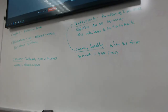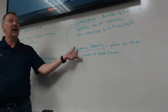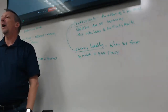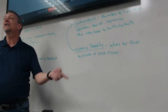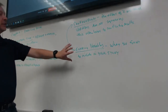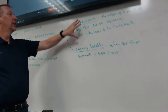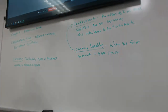The problem with observational studies is you have a lot of lurking variables. You don't know why people choose to smoke, but those reasons are different. So you have a lot of lurking variables and confounding going on because of those lurking variables.